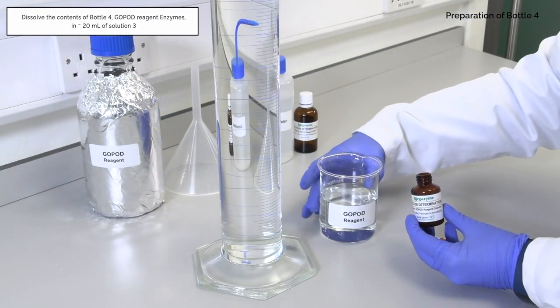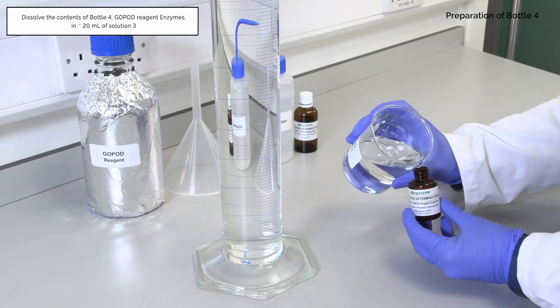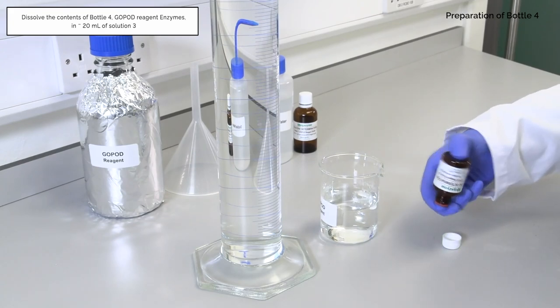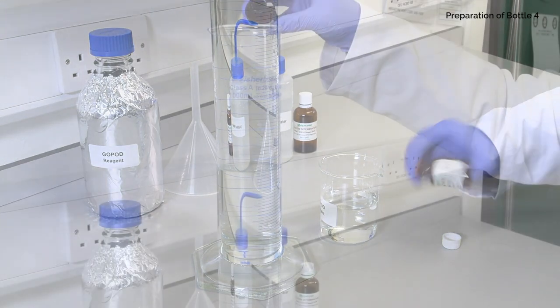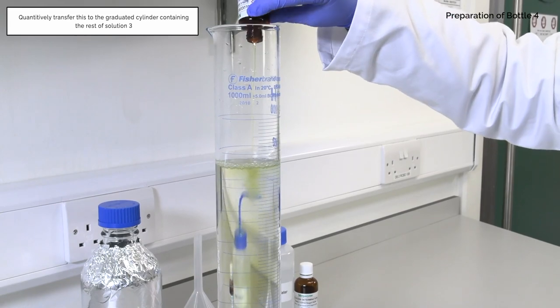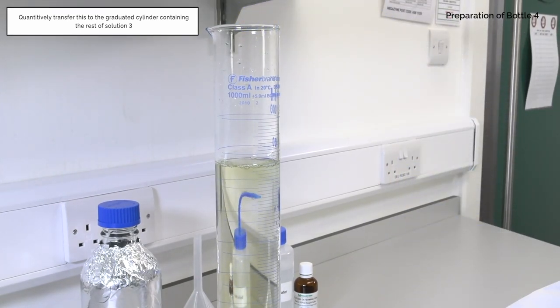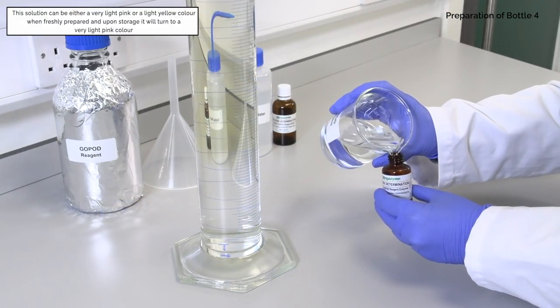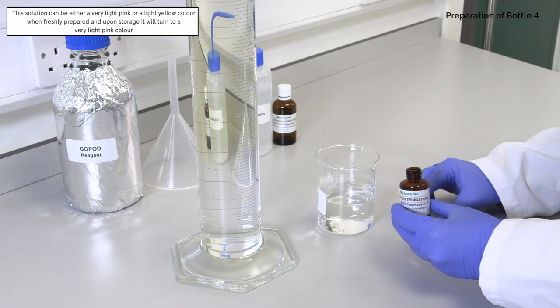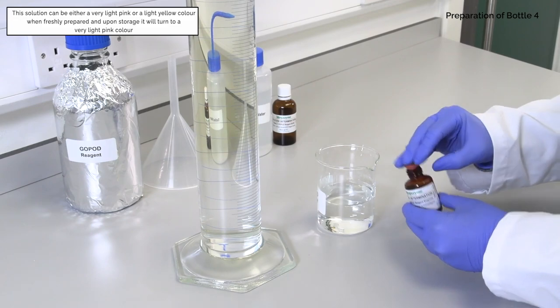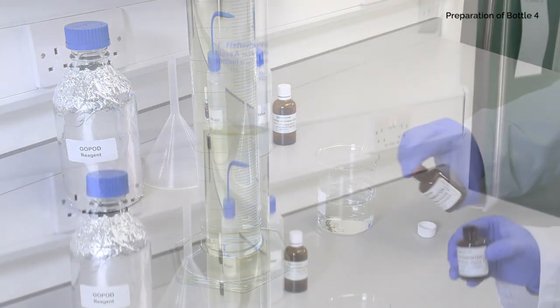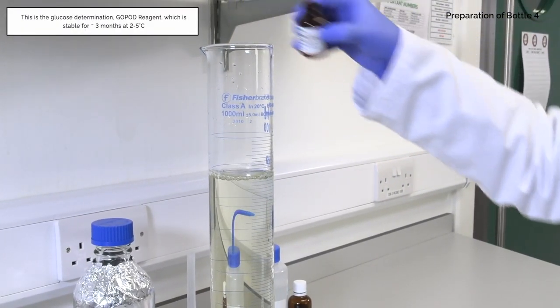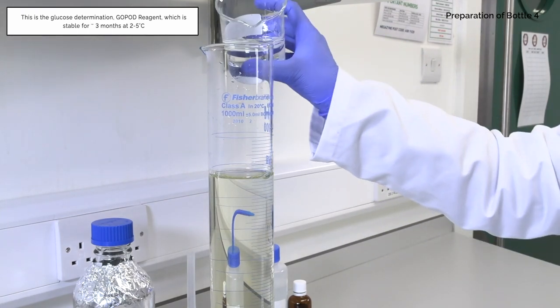Dissolve the contents of bottle 4, GOPOD reagent enzymes, in approximately 20 milliliters of solution 3. Quantitatively transfer this to the graduated cylinder containing the rest of solution 3. This solution can be either a very light pink or a light yellow color when freshly prepared, and upon storage it will turn to a very light pink color. This is the glucose determination GOPOD reagent, which is stable for approximately 3 months at 2 to 5 degrees Celsius.